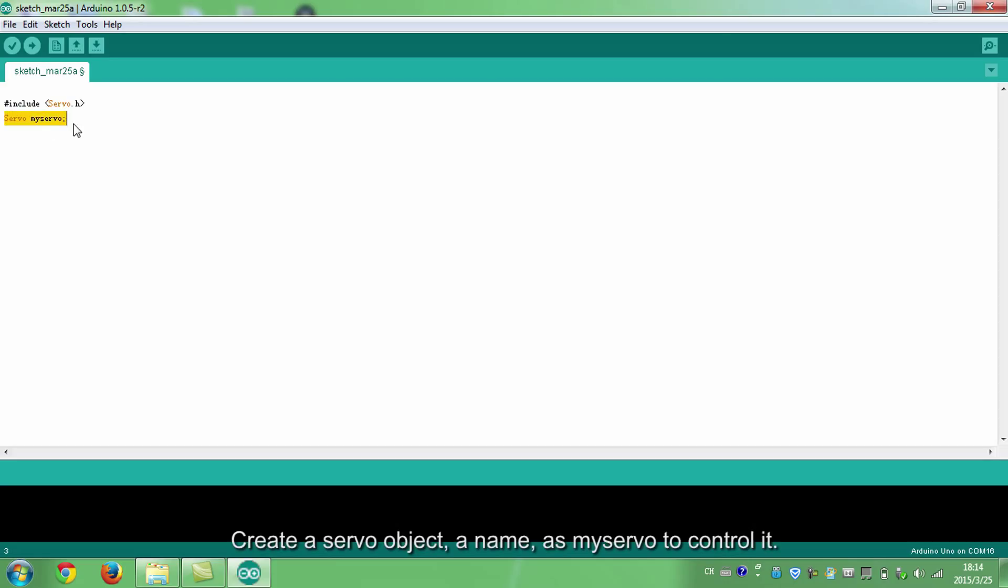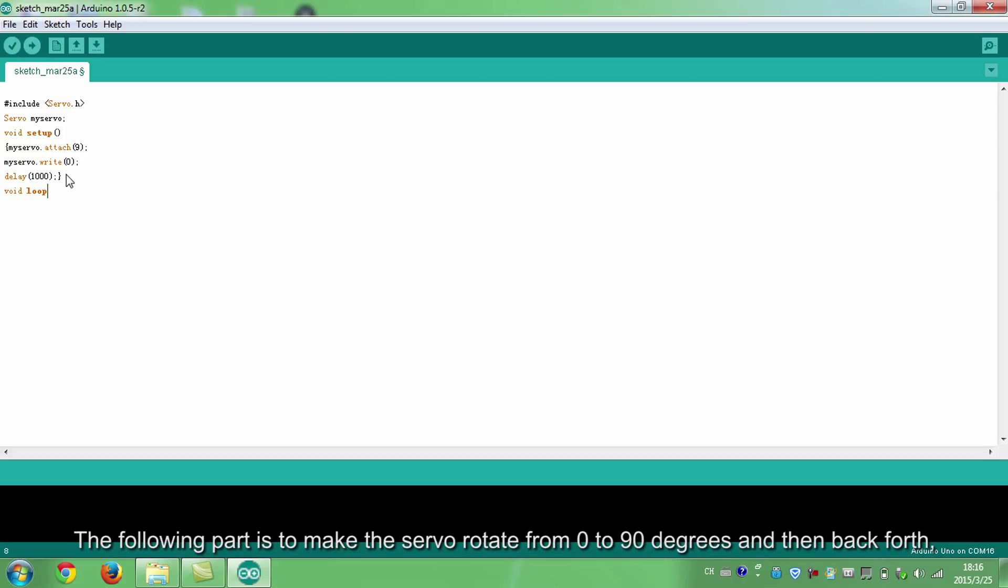Create a servo object, a name, as myServo, to control it. Define pin 9 as the pin for the servo. Delay 1 second. The following part is to make the servo rotate from 0 to 90 degrees and then back and forth. And every 1 second it pauses for 1 second. The setting for each specific angle will be quite similar to each other. So you may follow me in the first setting and then learn to do it yourself for the rest.